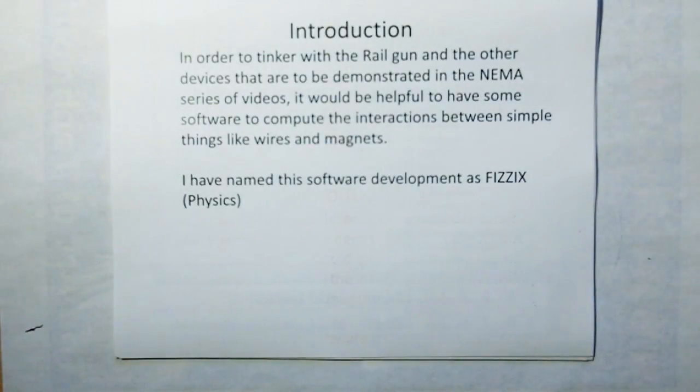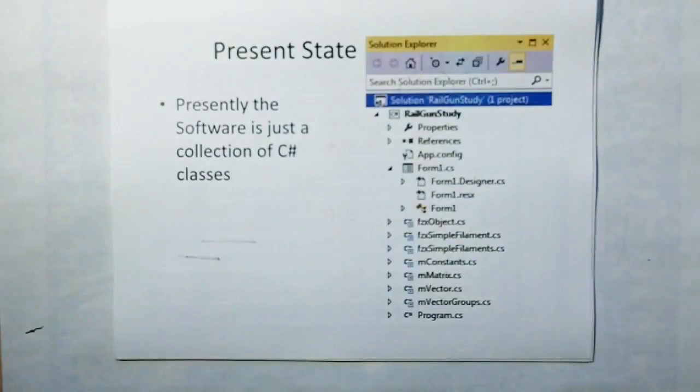In order to tinker with Railgun and other devices being demonstrated in the new electromagnetism application series, it'd be helpful to have some software to compute the interactions between simple things like wires and magnets. I have a name for this software: physics.